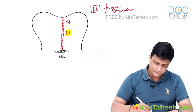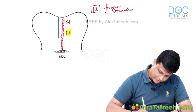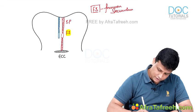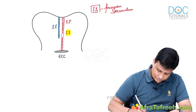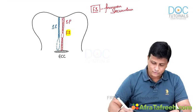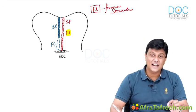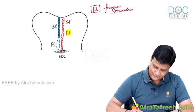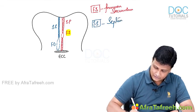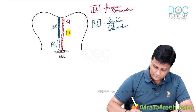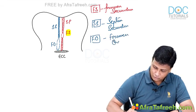Just adjacent to septum primum, there is formation of one more septum. That septum descends down, but it is not going to merge or meet with the endocardial cushion. That septum is septum secundum, and in this septum there will be one opening — that foramen is referred to as foramen ovale. SS stands for septum secundum, and FO stands for foramen ovale.